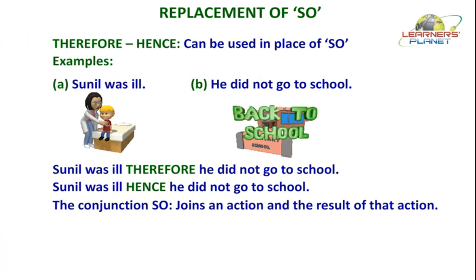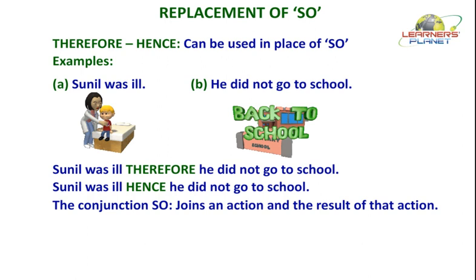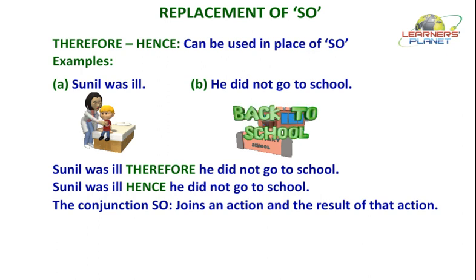Just as SINCE and AS can be used in place of BECAUSE, there are two other conjunctions that can be used in place of SO. These are THEREFORE and HENCE. Just like SO, these are also used to talk about the result of an action, or about another action that will automatically follow the first one. Let us replace SO in the examples with THEREFORE and HENCE to understand their use.